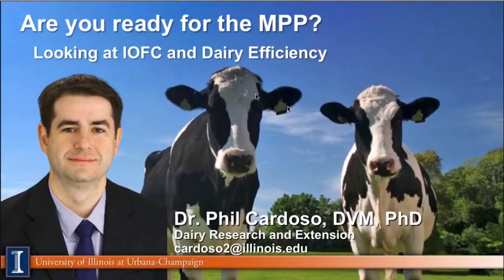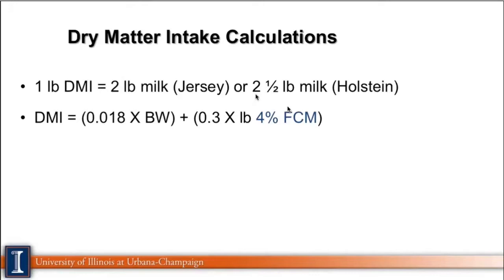One thing I'm going to say is that there is no secret, no magic, and we can do all this by hand. We have some guidelines, some rules of thumb: one pound of dry matter intake — I'll be referring to this as DMI — is equal to two pounds of milk in a Jersey cow, or two and a half pounds of milk in a Holstein cow.